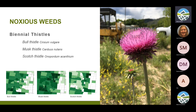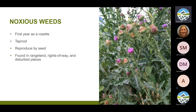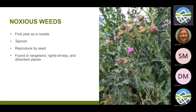The next weed is musk thistle — this one is very common here in the area. We're going to talk about three biennial thistles in the county, and also diffuse knapweed, which is also a biennial in the sunflower family. The commonalities are that they all start the first year as a rosette, all reproduce by seed, all have a taproot, and are all found in the same sorts of places — along roadsides, waste places, and rangeland.